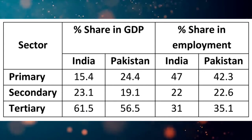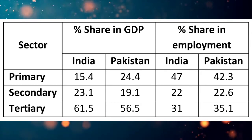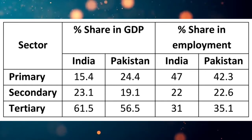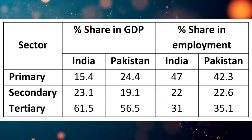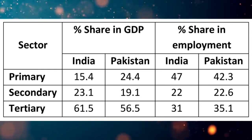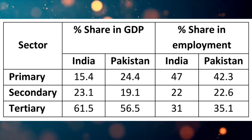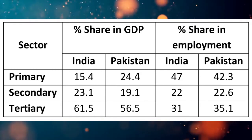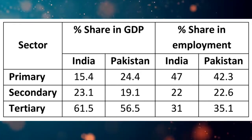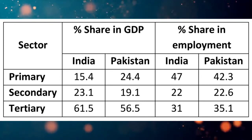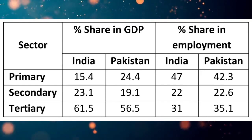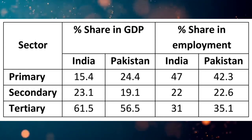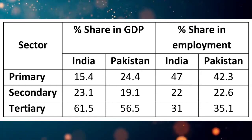Now let us understand the structure of growth. The growth process caused a shift in sectoral share in output and employment. The table is based on data of 2016. Both countries have experienced a noticeable structural transformation — the primary sector is no longer the principal contributor to GDP. The percentage share of the primary sector tended to decrease, while the secondary and tertiary sectors tended to increase. For both India and Pakistan, the tertiary sector contributed more to GDP expansion, owing to faster integration of these economies with global economies.